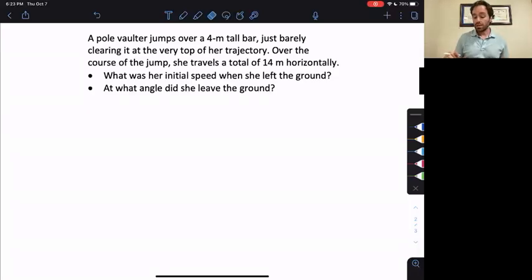Here we are once more doing a nice, difficult physics problem. A pole vaulter jumps over a four-meter tall bar, just barely clearing it at the very top of her trajectory. Over the course of the jump, she travels a total of 14 meters horizontally.